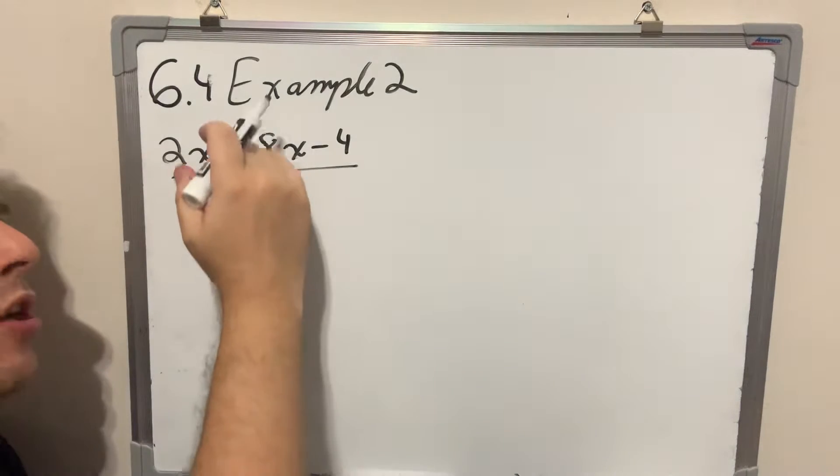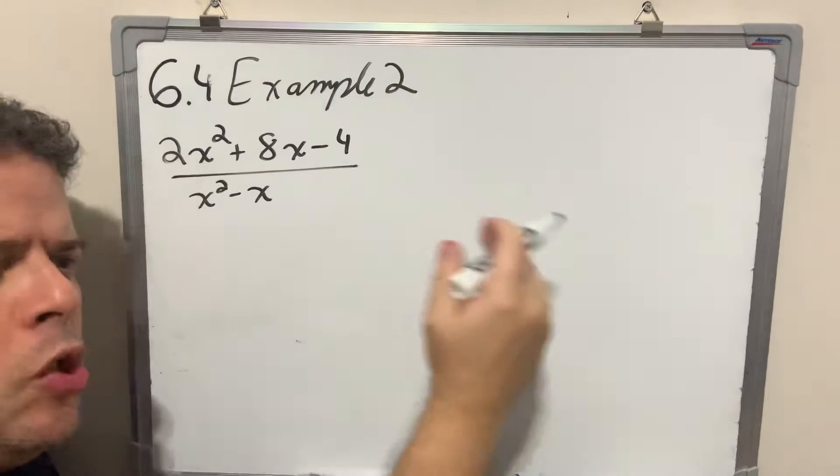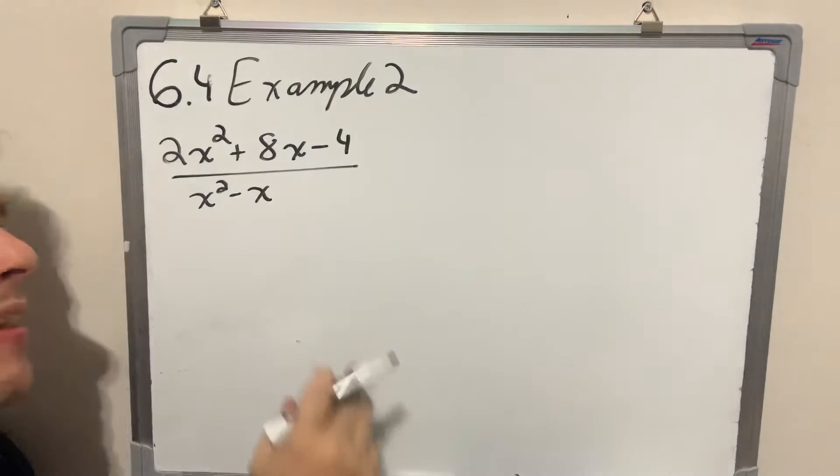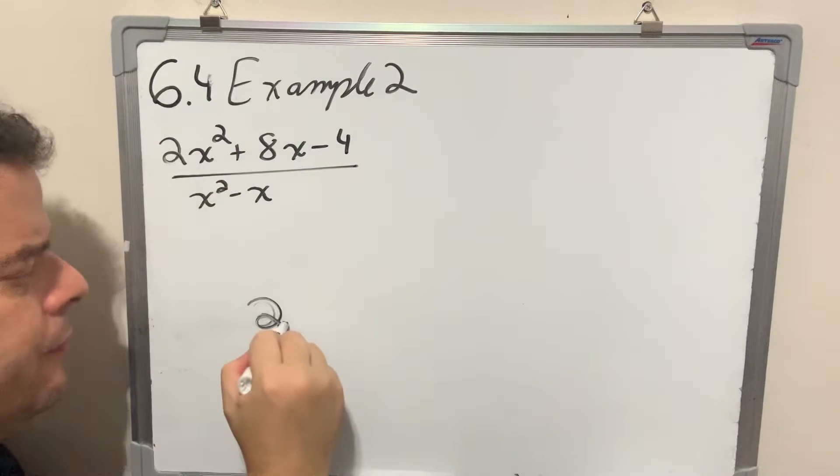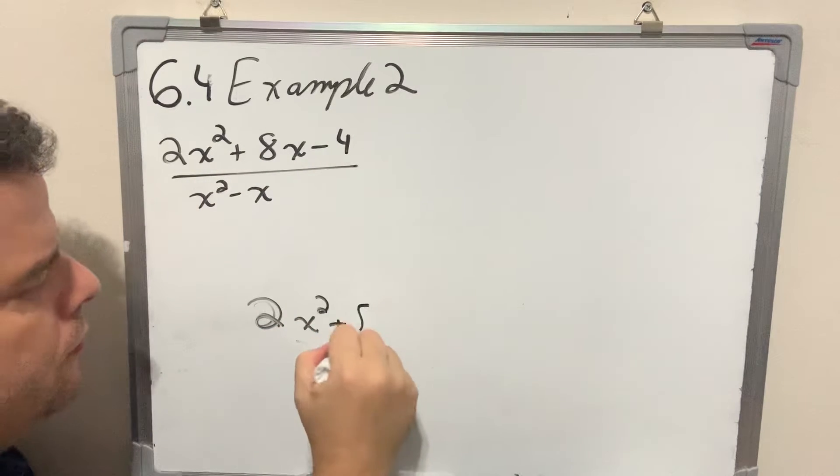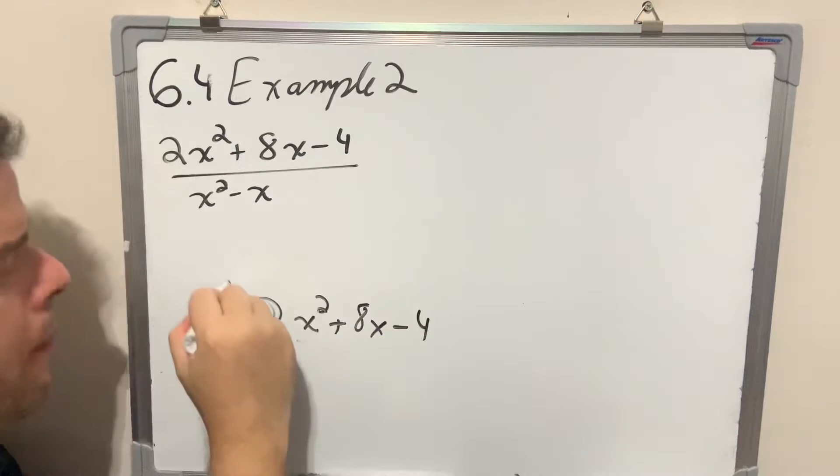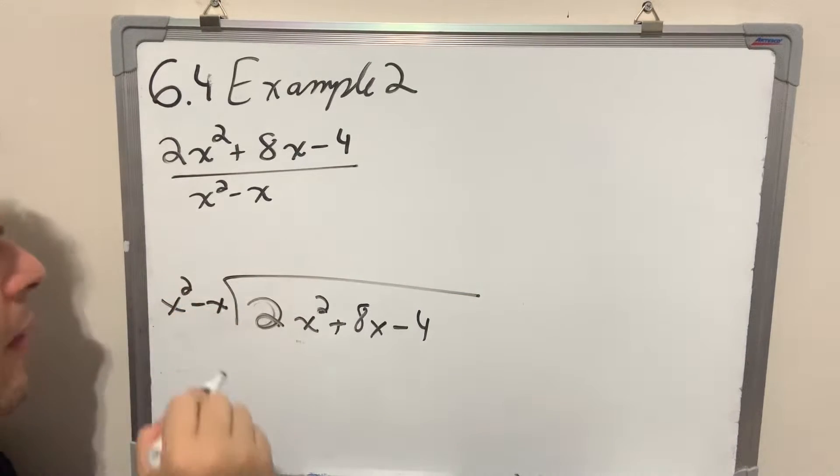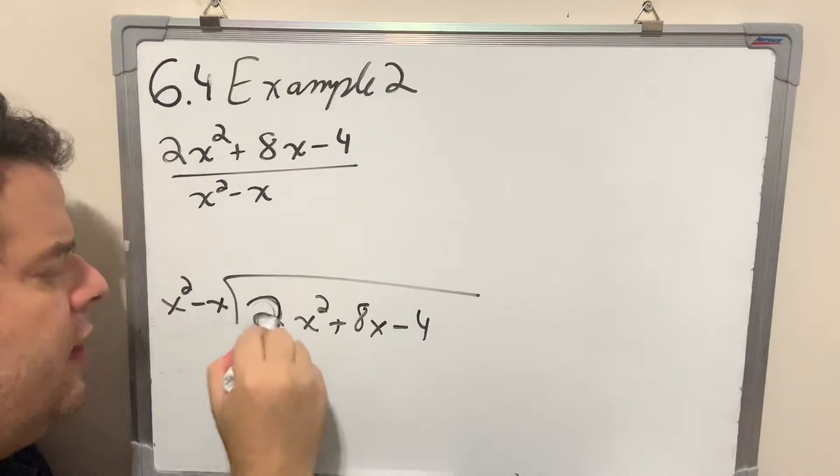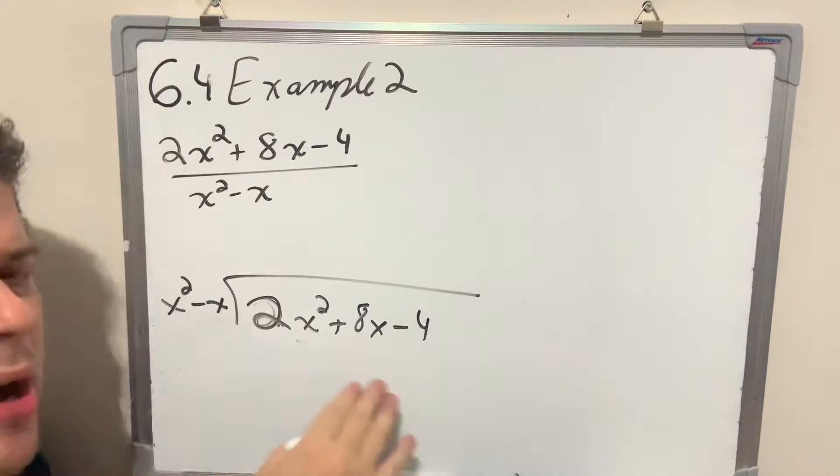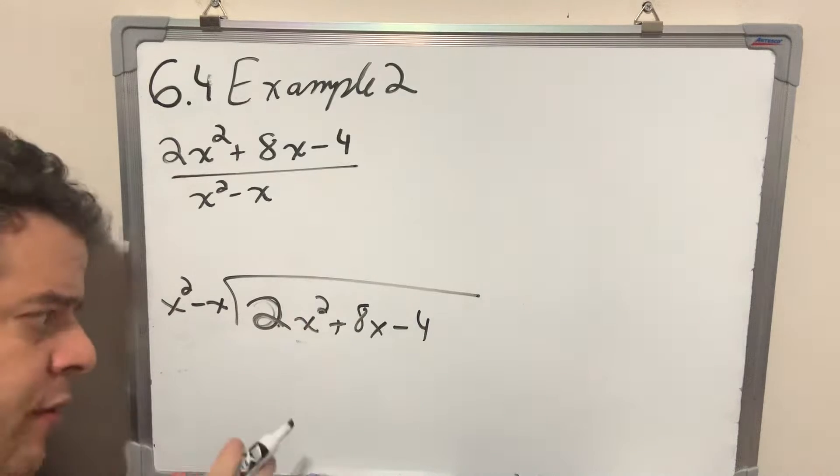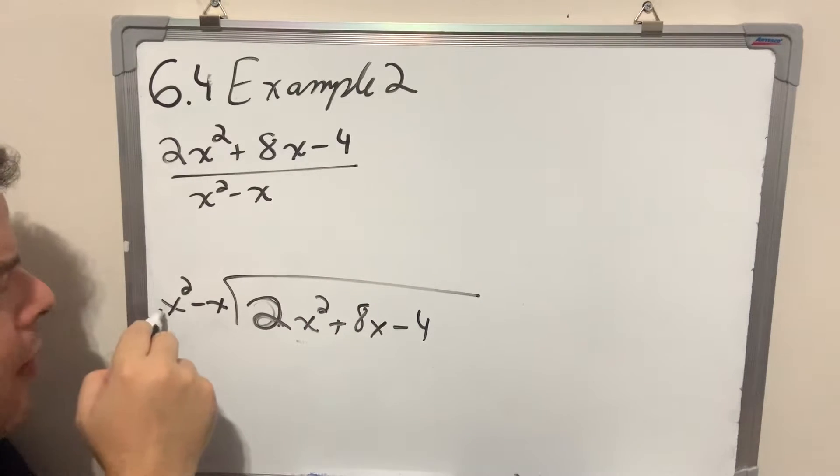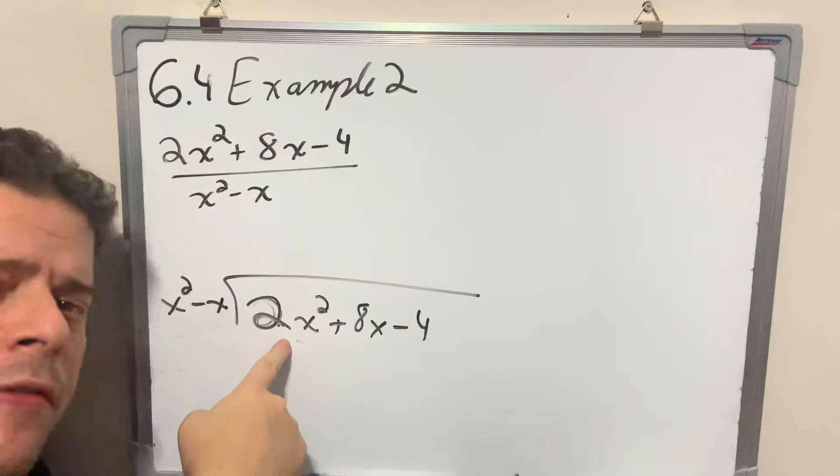In order to turn this improper fraction to a proper fraction, all I have to do is long division. I divide my numerator by my denominator. And remember, for the people who forgot long division, all you have to do is always focus on the first terms of the dividend and the divisor and ask yourself, what is this term? What do I have to multiply to this term for me to end up with this term?